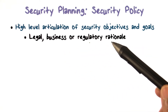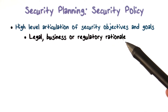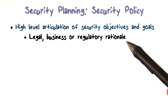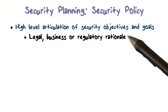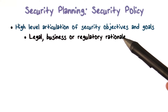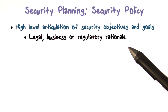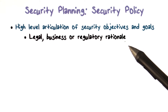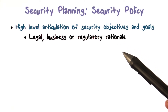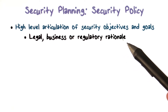This high-level articulation would include some sort of legal, business, and regulatory rationale for why the policy has what it does. For legal and regulatory requirements, you don't really have a lot of choice. Business reasons tell you why it's good for the enterprise or for the company, and what's good for the company is of course good for its employees. That's the articulation of the underlying reasons why we want to have the kind of policy that we do.